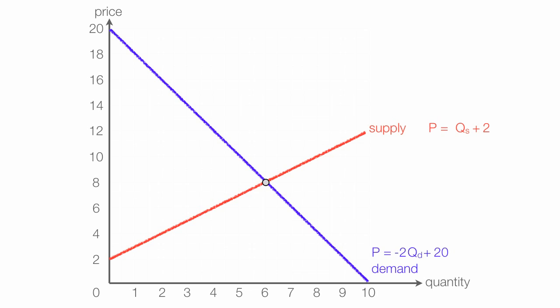The supply curve is price is equal to quantity supplied plus 2, which is in the same format that you use in algebra which is y equals x plus 2, where y is the y axis instead of price and x is the x axis instead of quantity.